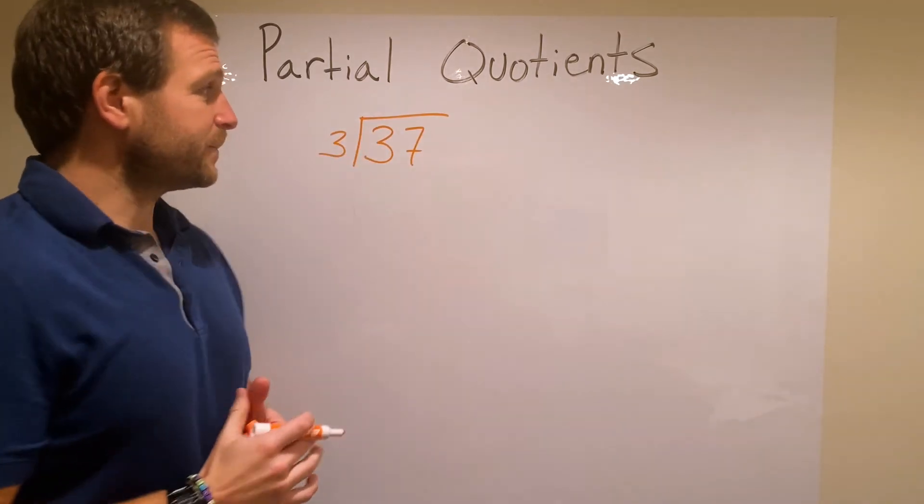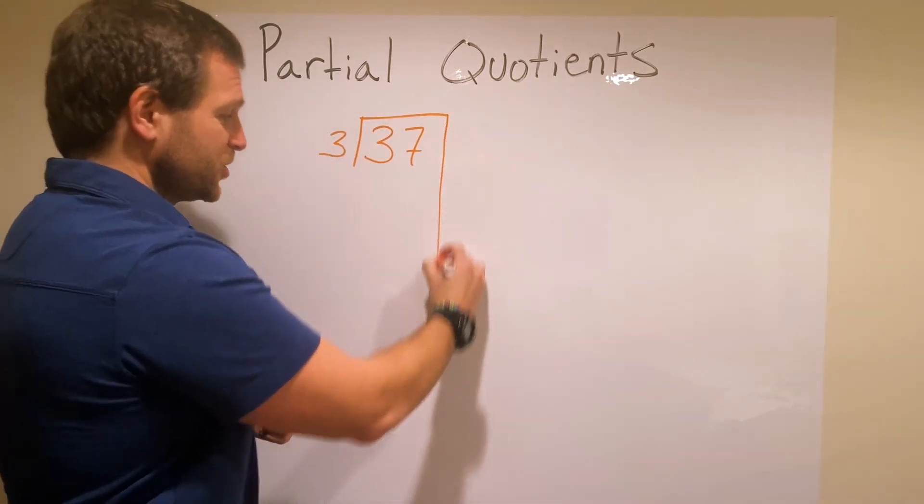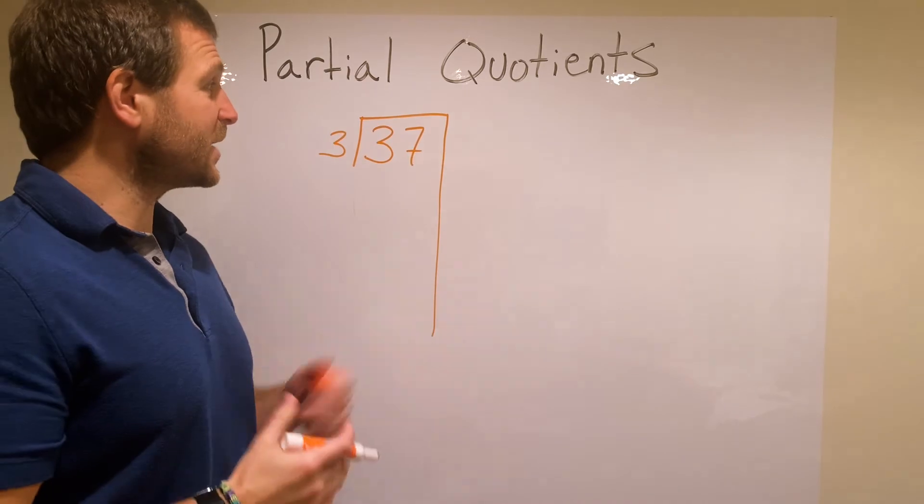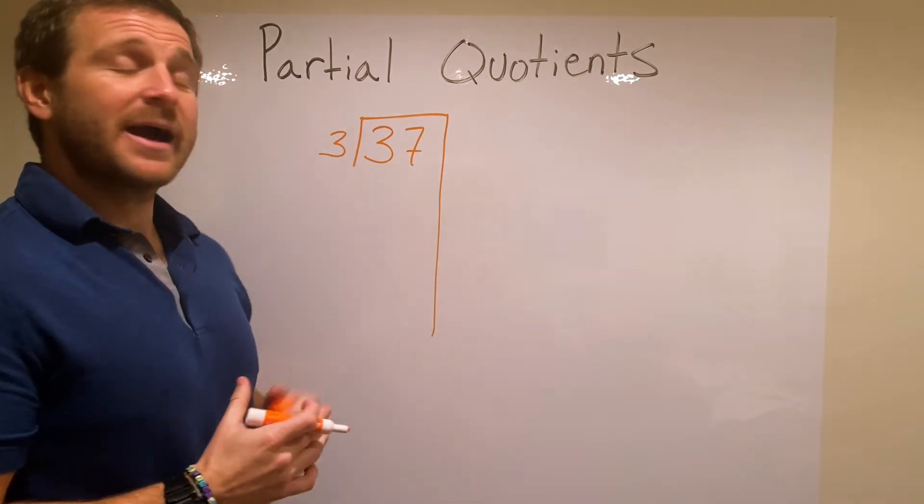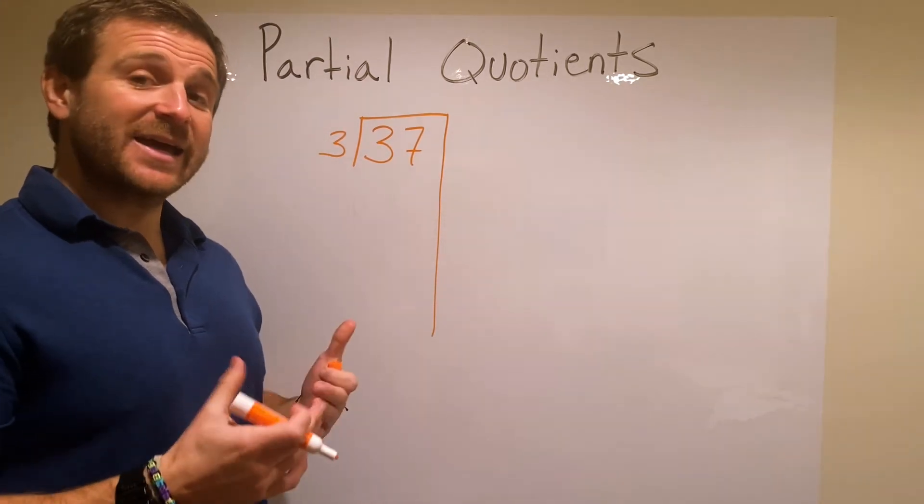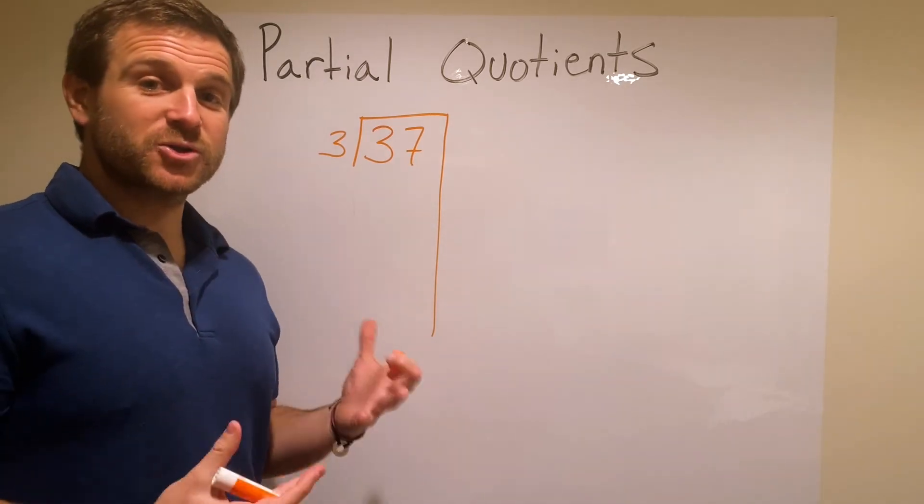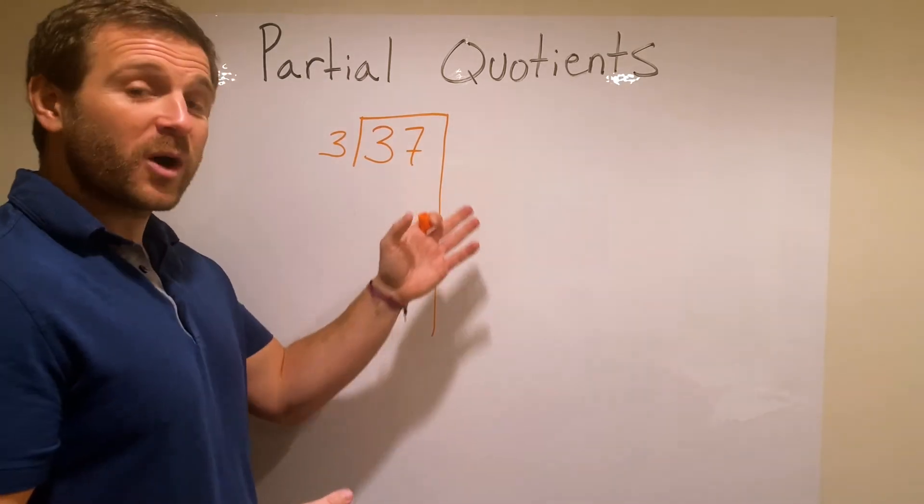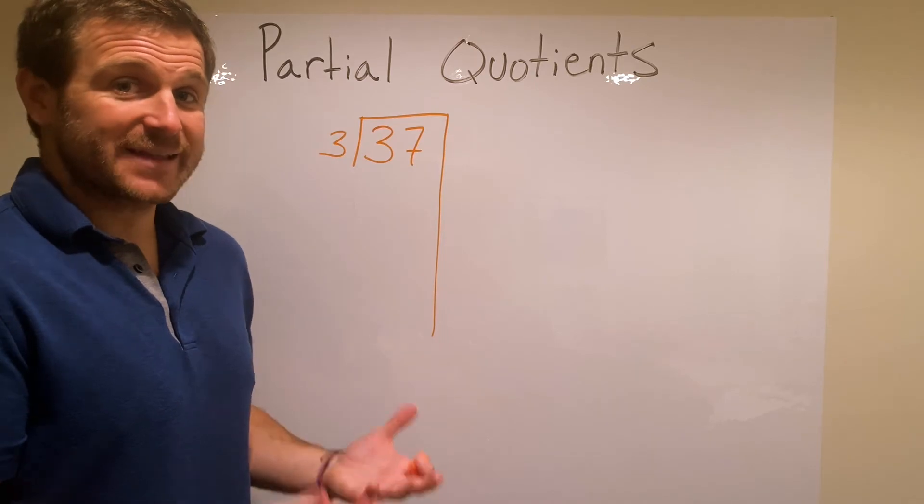37 divided by 3. Now because we're doing partial quotients, I'll drop my line over here, and now I want to think, how many times can 3 go into 37? And again, students can use any partial quotients they want. So if they want to start with 1, 2, 3, they can do that. That's easy.